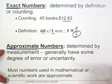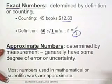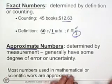Approximate numbers are the numbers that we usually use in mathematics and science. And they are determined by measurement. And most of these measurements are generally considered to have some degree of error or uncertainty.